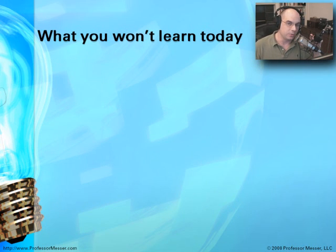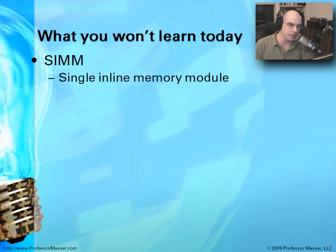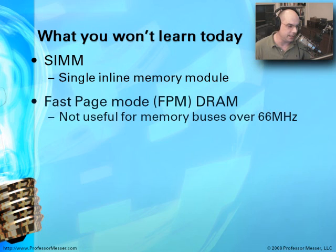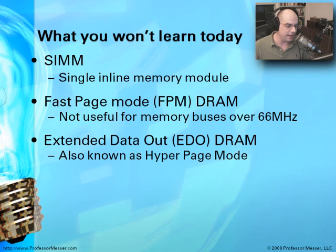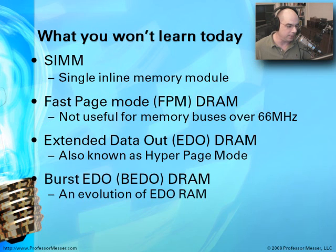What I'm not going to go through is just as important, because there are certain things that are not on the A-plus exam, but there are terms that might come up in answers just to throw you. One of the older types of memory is called SIM — we're not going to talk about SIMs today. There's also an older type called Fast Page Mode, or FPM DRAM, and another called Extended Data Out, EDO RAM. Since I'm telling you we're not going to learn about them, you can automatically discount those as answers on your A-plus exam.